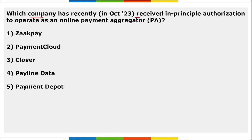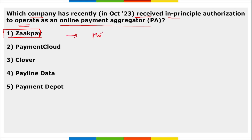Which company recently received in-principle authorization to operate as an online payment aggregator? It is Zagpay. Zagpay is the payment gateway arm of Mobikwik, and this will enable Zagpay to onboard new merchants onto their platform for processing online payments.